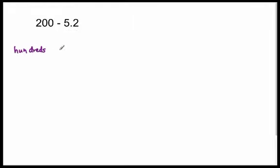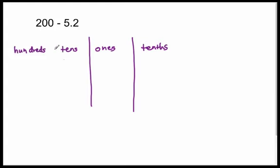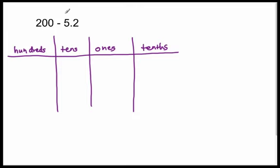Last problem. We'll take two hundred minus five and two tenths. The largest place value in any of these numbers is the hundreds place, so I'm going to start with hundreds, and the smallest place value is the tenths, so I'm going to go to the tenths. So we start with the hundreds, tens, ones, and then the tenths. All right, let's model the subtraction. We always model the first number. So we have two hundred — that's written just like this, two hundreds, and that's all we have.